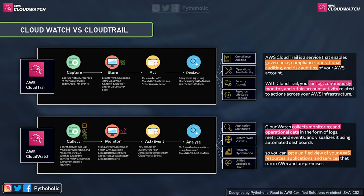Remember this very carefully: AWS CloudTrail is a service that enables governance, compliance, operational auditing, and risk auditing of your AWS account. With these audit processes, you can measure the integrity of the data and the processes being followed. Operational auditing is something we use when we have a network in place.